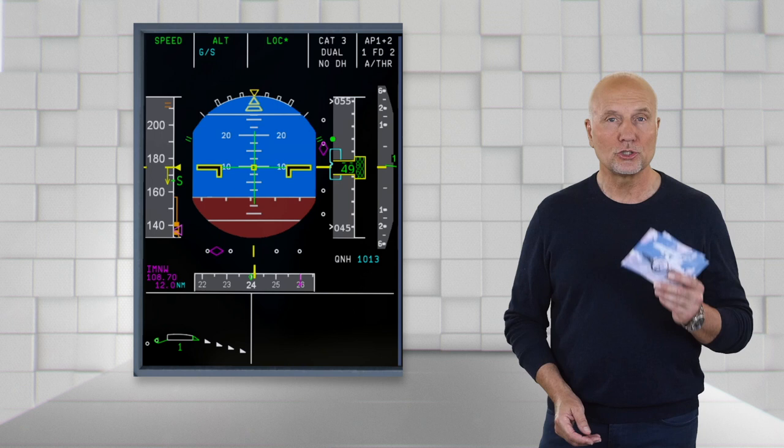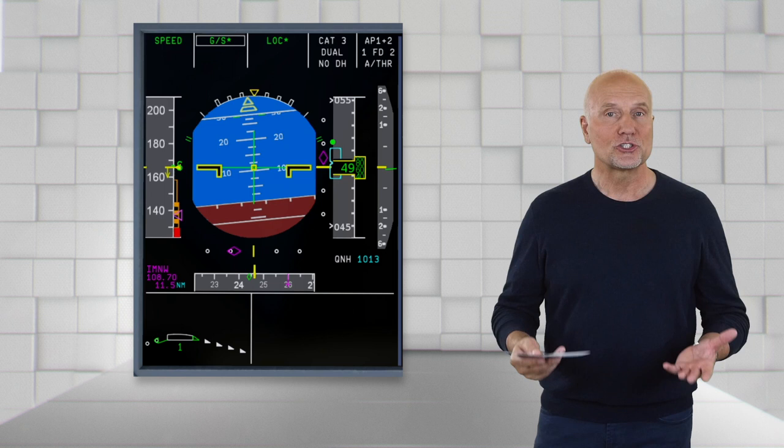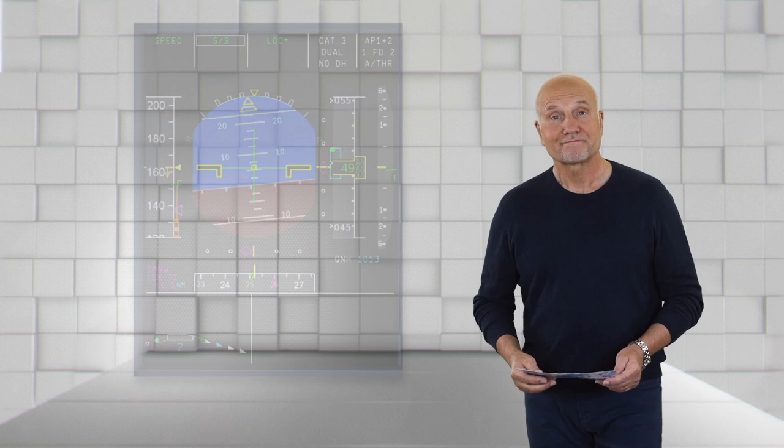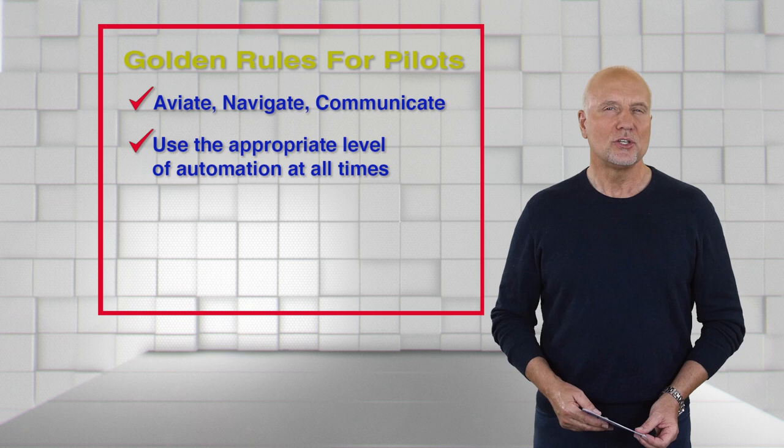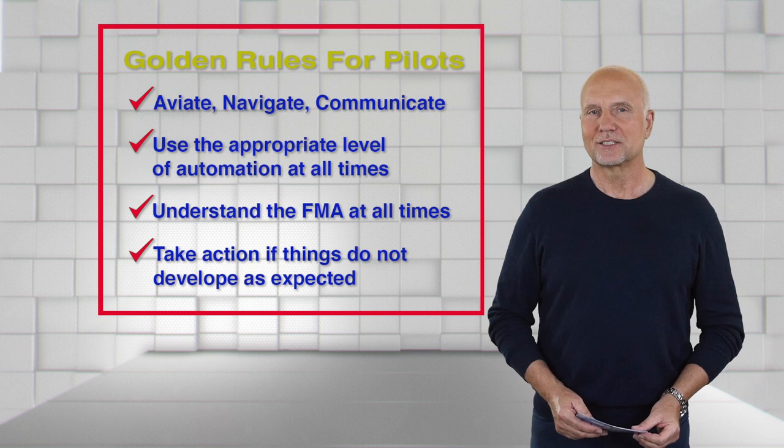To use the appropriate level of automation at all times, the flight crew shall determine and select the appropriate level of automation which may include manual flight, understand the operational impact of the selected level of automation and confirm that the aircraft is responding as expected. The golden rules for pilots: Aviate, navigate, communicate, always in this order with adequate task sharing. Use the appropriate level of automation at all times, understand your FMA at all times, and take action if things do not go as expected.